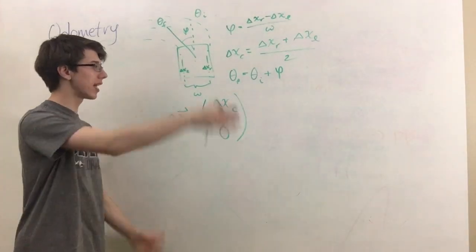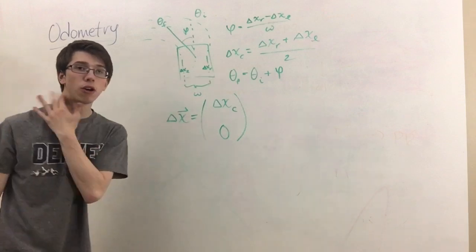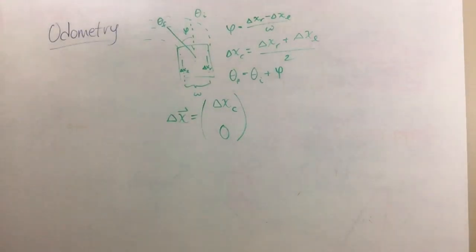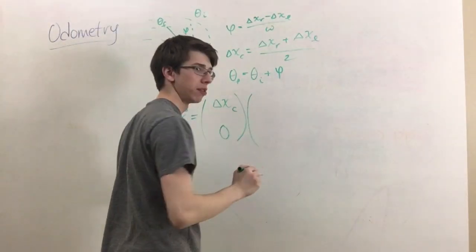But we need to rotate that given the current orientation of our robot. And so we do that by multiplying that by a rotation matrix.